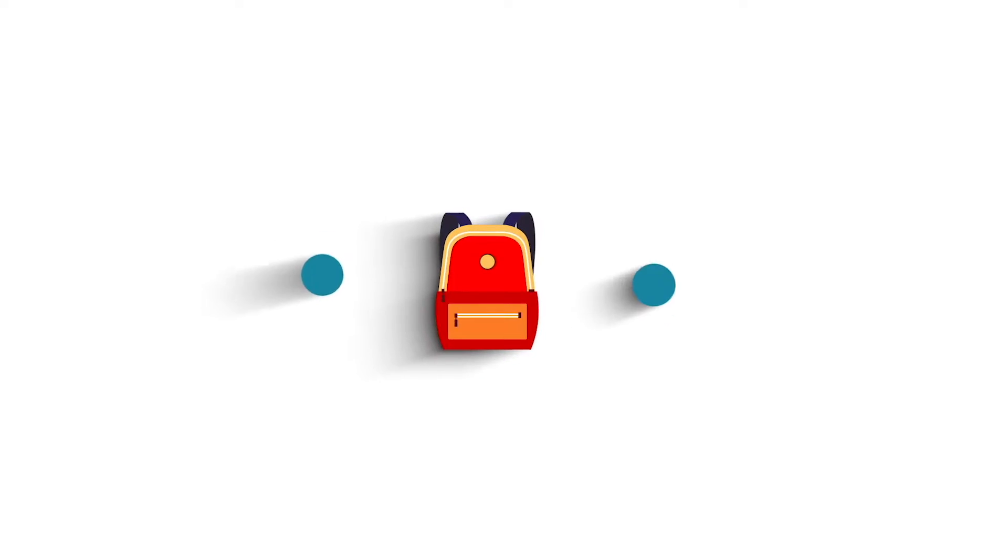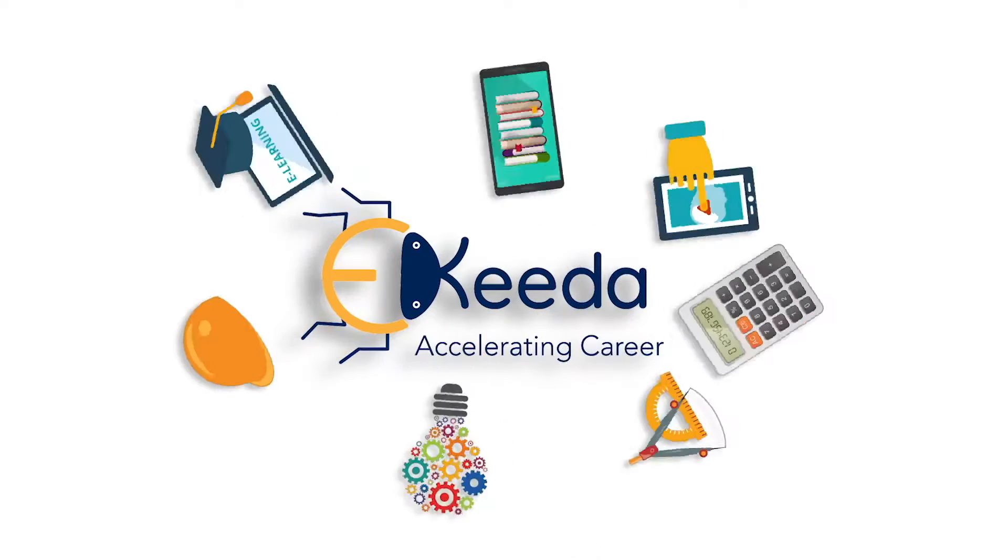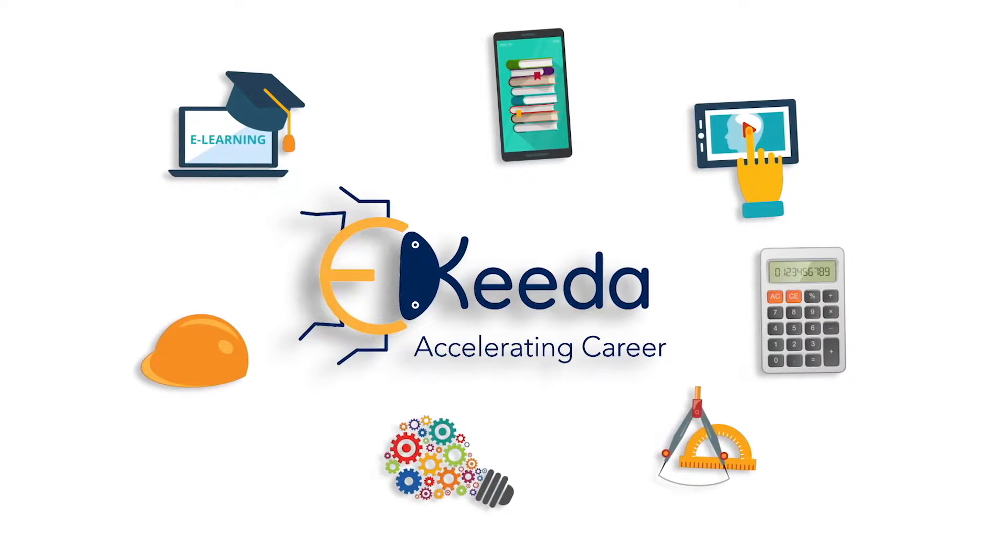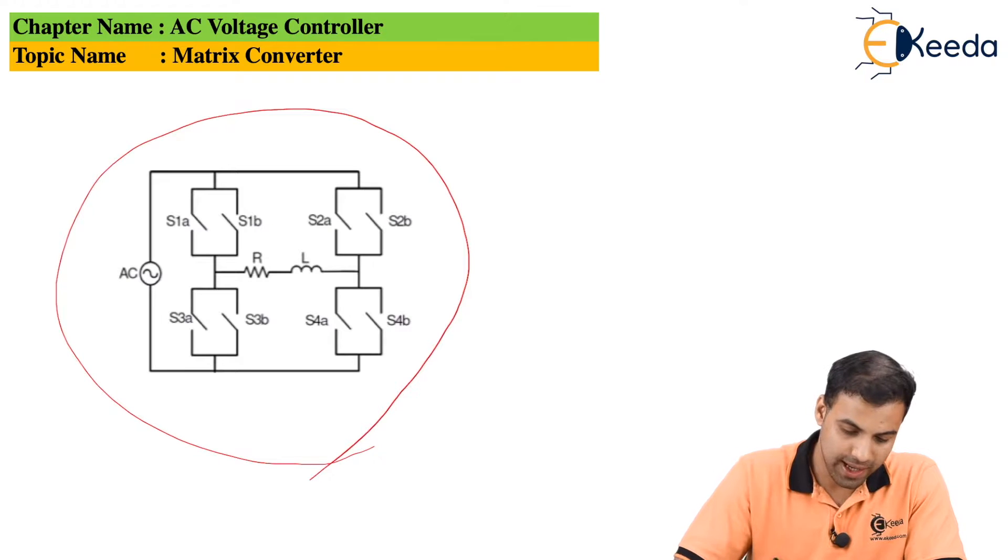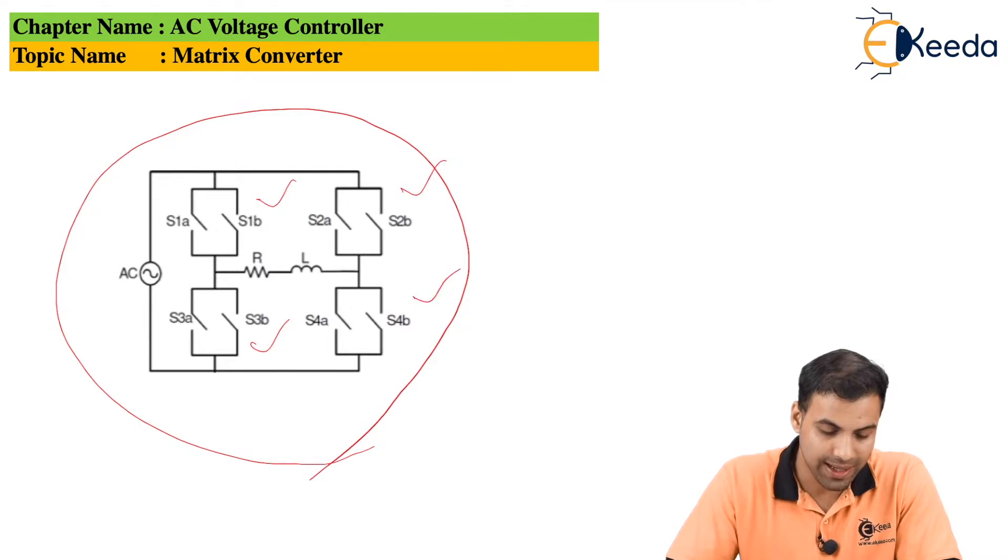This is the circuit diagram of a matrix converter. Here you can see I have connected an AC source along with four switches with an RL load. So here all the four switches - this is switch 1, switch 2, switch 3, and switch 4.